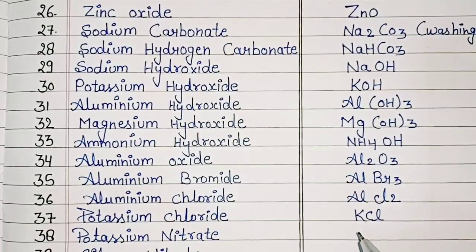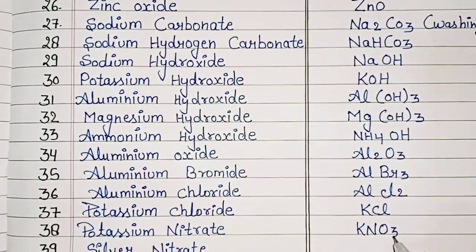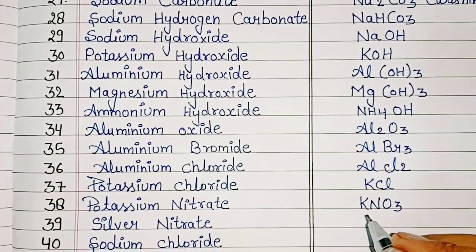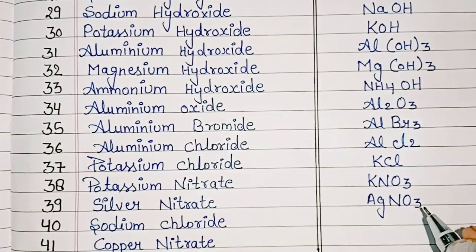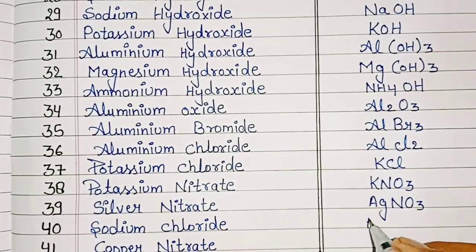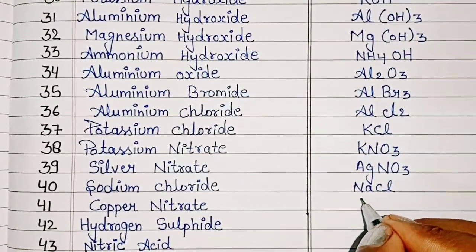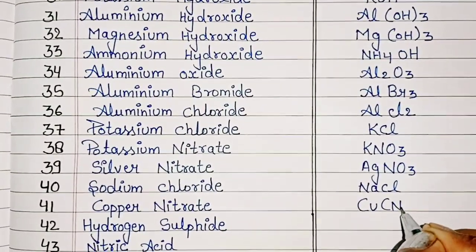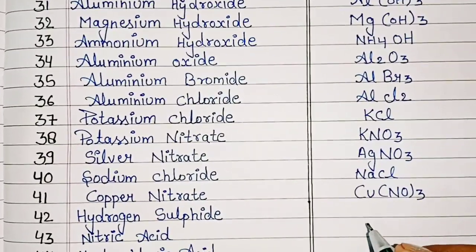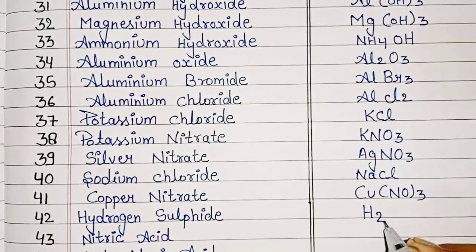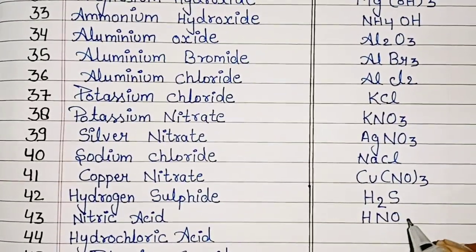Potassium Nitrate: KNO3. Silver Nitrate: AgNO3. Sodium Chloride: NaCl. Copper Nitrate: CuNO3. Hydrogen Chloride, Hydrogen Sulphide: HNO3.